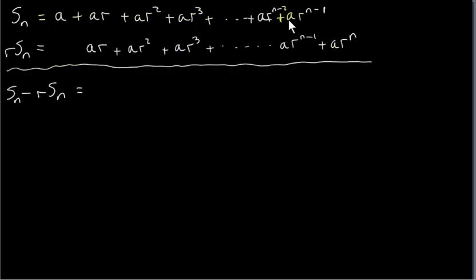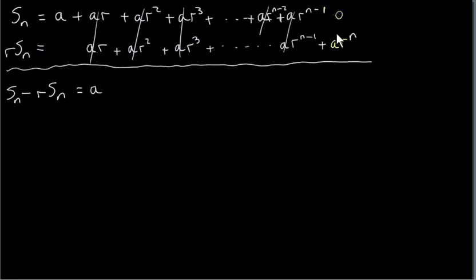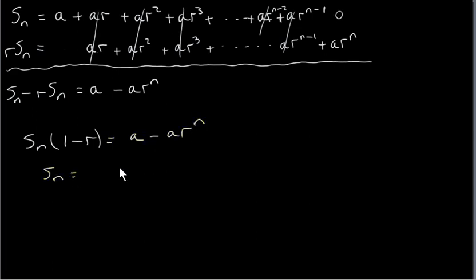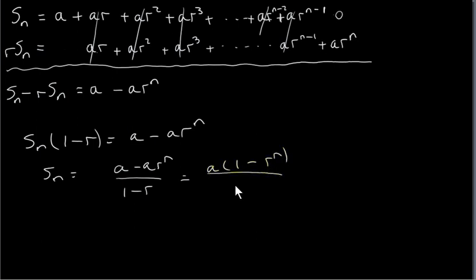The next step is to subtract: we take Sn and subtract r times Sn. We have a minus 0 is a. Then ar minus ar is 0 — these cancel out, and in fact everything in between cancels out. The second last term cancels with ar to the n minus 2 below it, and then we have minus ar to the power of n remaining. So from this equation: Sn times (1 minus r) equals a minus ar to the power of n, which means Sn is (a minus ar to the n) divided by (1 minus r). We can factor a from the top, and here we get the formula seen earlier.